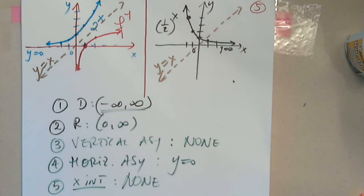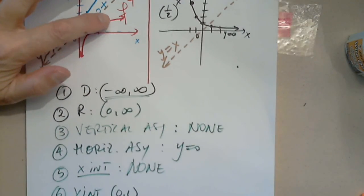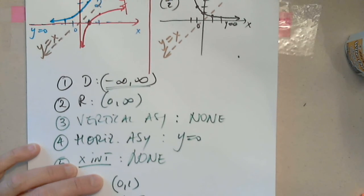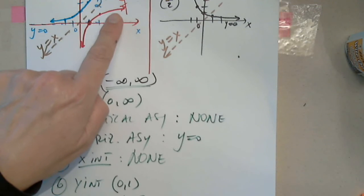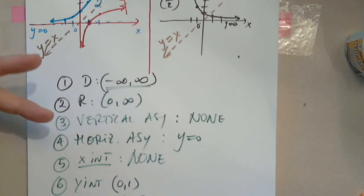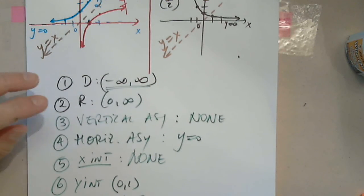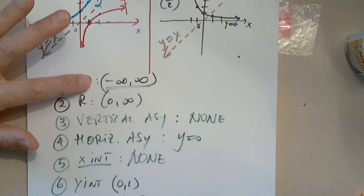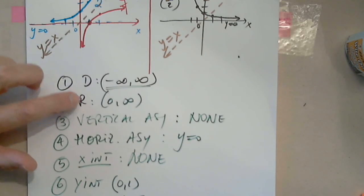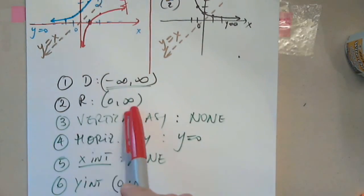This is f inverse — the inverse function of 2^x. What is the domain of this inverse function? The domain is zero to infinity — or rather (0, ∞). The domain of the original function becomes the range of the inverse, and the range of the original becomes the domain of the inverse.